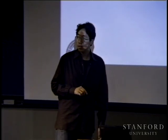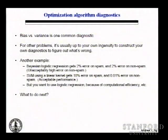In contrast, if you actually figure out whether the problem is high bias or high variance, you can rule out several of these solutions and save yourself many months of wasted effort. Bias versus variance is one common diagnostic. For other machine learning problems, it's often up to your own ingenuity to construct your own diagnostics to figure out what's wrong — to look at the difference between training and test error, or something else.